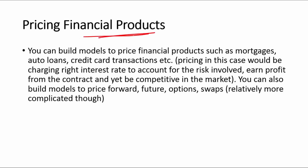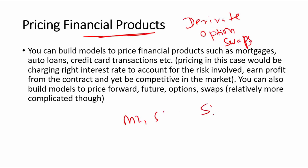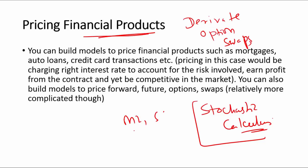Pricing of financial products is one of the most sophisticated areas of finance. You are trying to price products that banks sell, whether it's a car loan, a mortgage, or derivative products like options, swaps, futures, and forwards. For these, you often need stochastic calculus rather than just ML or statistical modeling to develop pricing models. Nowadays, people are also experimenting with ML techniques to price derivatives — it's a new field with not much literature yet.